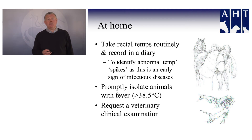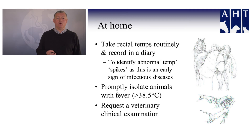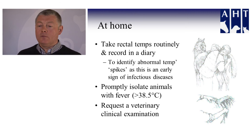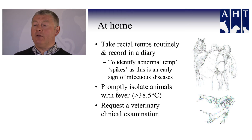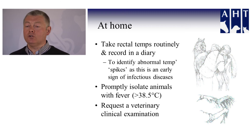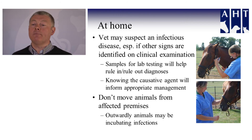Whilst at home, it is very good practice to take rectal temperatures routinely and to record these in a diary for each animal. Build up a picture of what is normal for each animal, and then when the abnormal happens and the horse spikes a temperature, you become aware of it straight away. Spiking of temperature is an early sign of infectious disease — not specific to any one disease, but in many infections it is the first sign detected. When that happens, it's good practice to promptly isolate those animals in a predetermined area designed for that purpose, and request a veterinary clinical examination. This is particularly important where more than one animal is spiking temperatures, suggesting an infectious disease may be spreading amongst them.